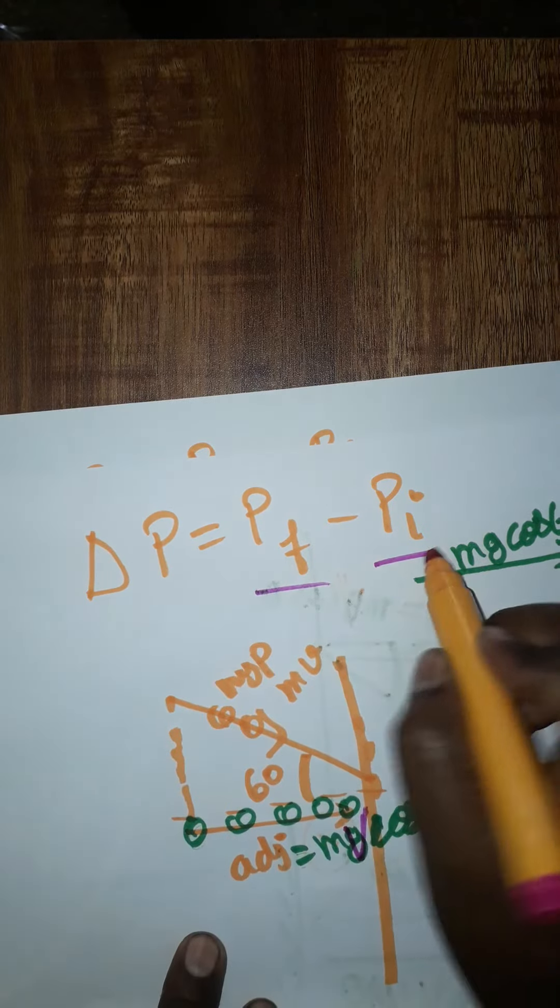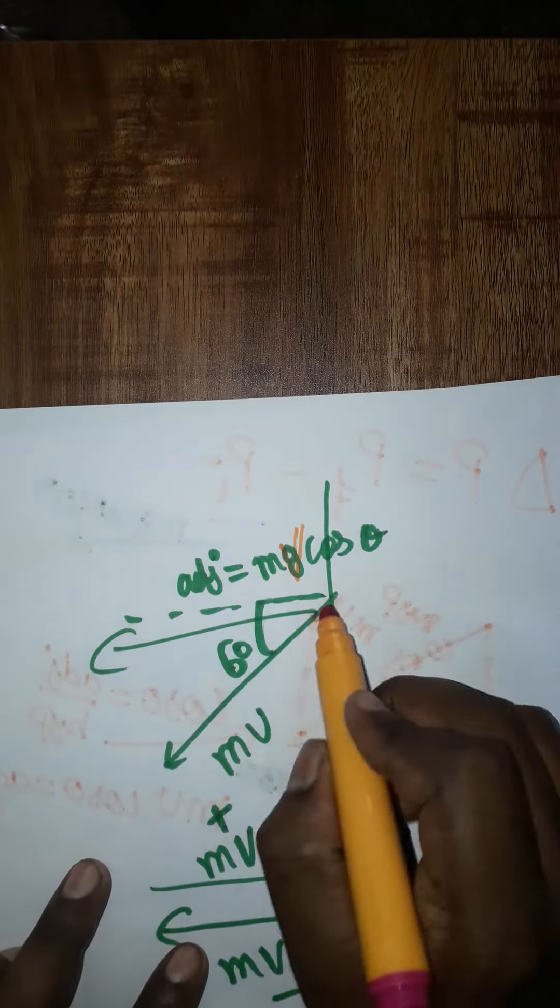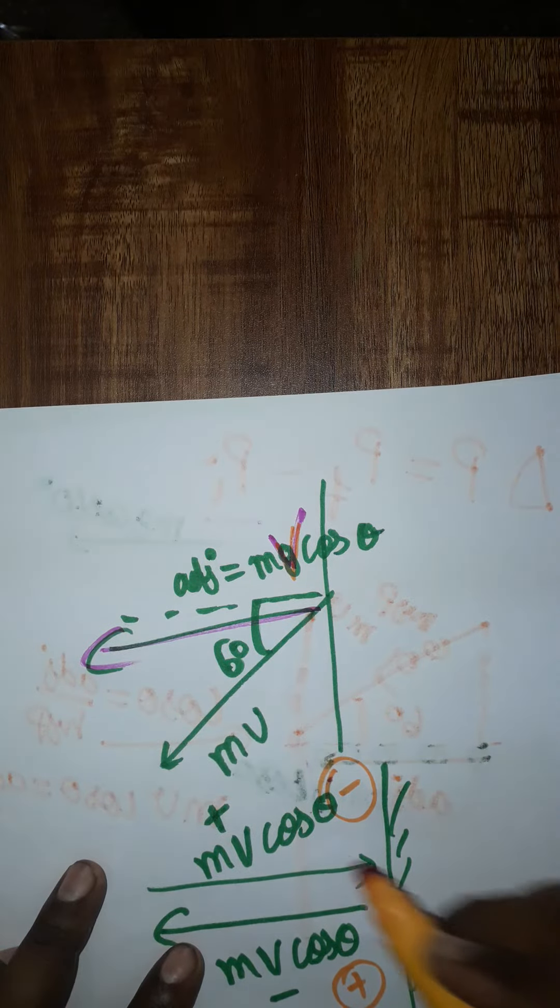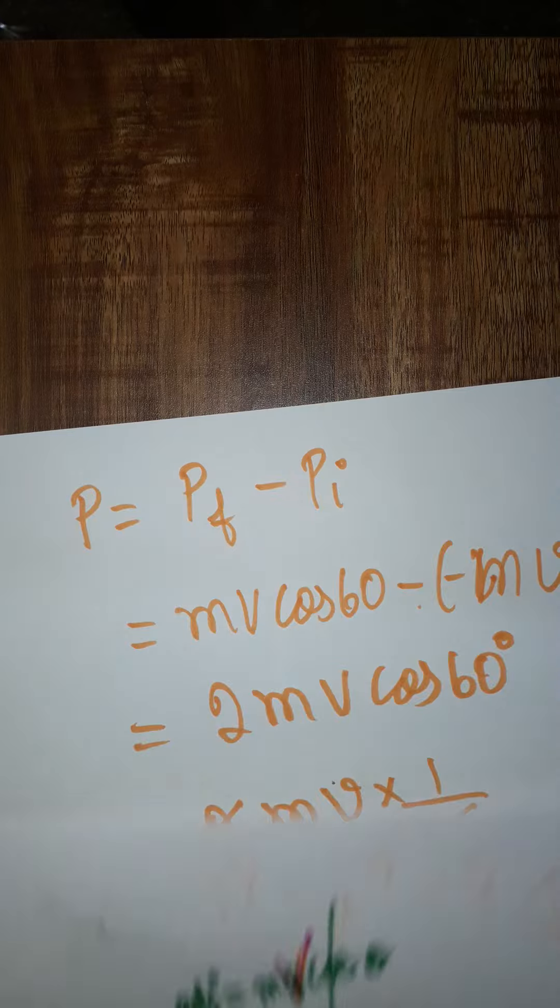Again I am taking reflection, which is going to be mv cos θ. So you have to take only the horizontal side. So change in momentum: initially mv cos θ, finally minus mv cos θ.